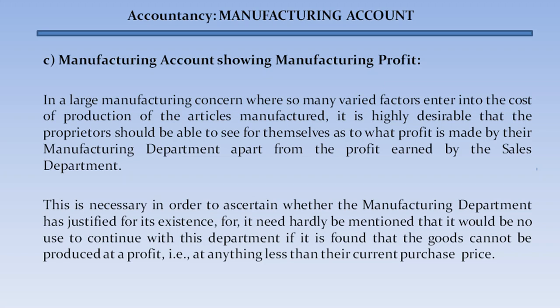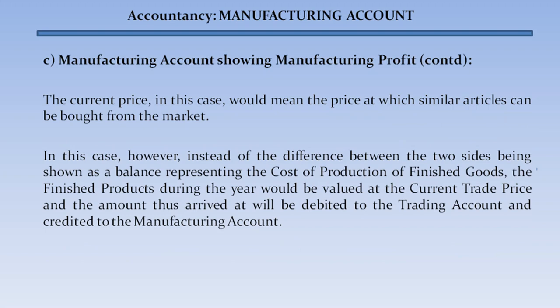In a large manufacturing concern where many varied factors enter into the cost of production, it is highly desirable that the proprietors should be able to see what profit is made by their manufacturing department apart from the profit earned by the sales department. This is necessary in order to ascertain whether the manufacturing department has justified its existence, for it would be no use to continue with this department if goods cannot be produced at a profit — that is, at anything less than their current purchase price.